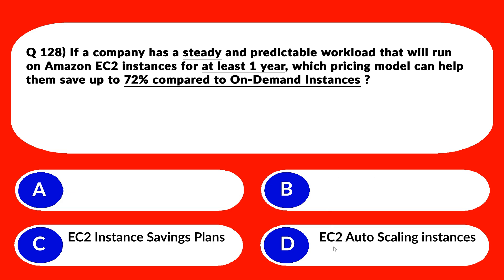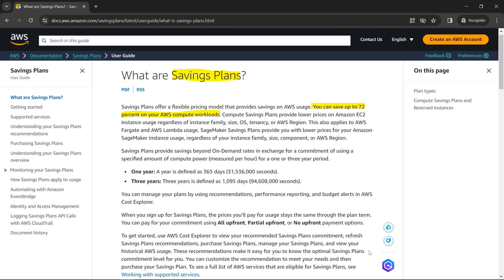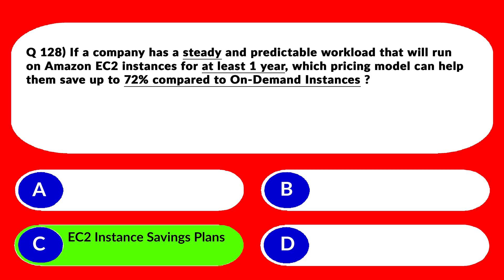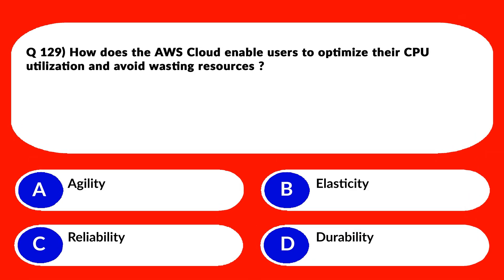Option D says EC2 Auto Scaling instances — we do not require auto scaling because the question doesn't mention any need to increase or decrease the number of EC2 instances. So D is out. We are left with EC2 Instance Savings Plans. The official documentation states you can save up to 72% on your AWS compute workloads — that's exactly what is required. Lock option C, EC2 Instance Savings Plans, as the correct answer.